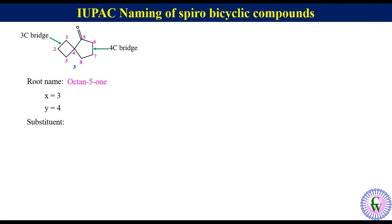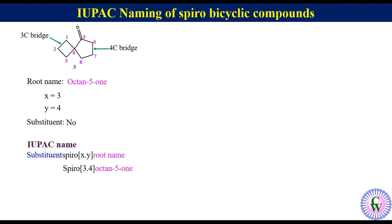There is no substituent. Root name: there are 8 carbon atoms in the ring with a keto group at C5, so the root name will be octan-5-one. IUPAC name: spiro[3.4]octan-5-one.